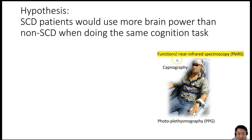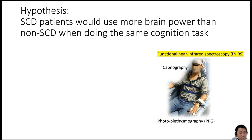Here is our study subject, and this time he has functional near-infrared spectroscopy, or fNIRS. You can see there's capnography measuring the CO2 concentration as he breathes, and also photoplethysmography, or PPG. The hypothesis was that sickle cell disease patients would use more brain power than non-sickle cell disease subjects when doing the same cognitive task.